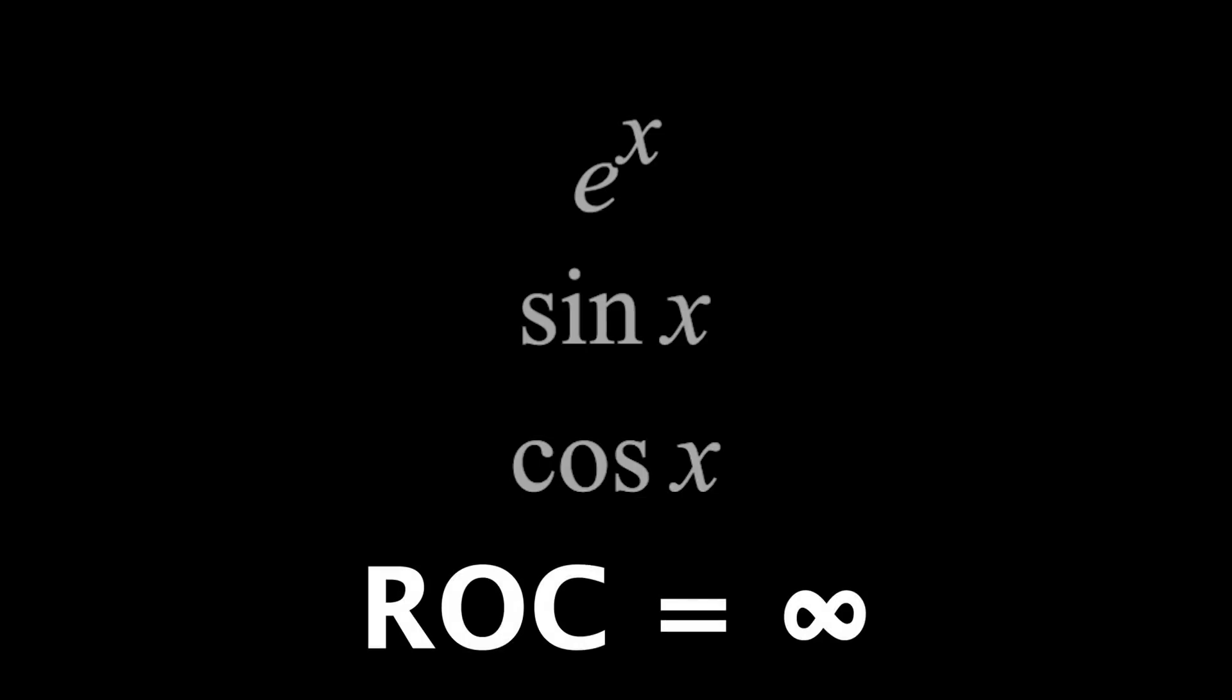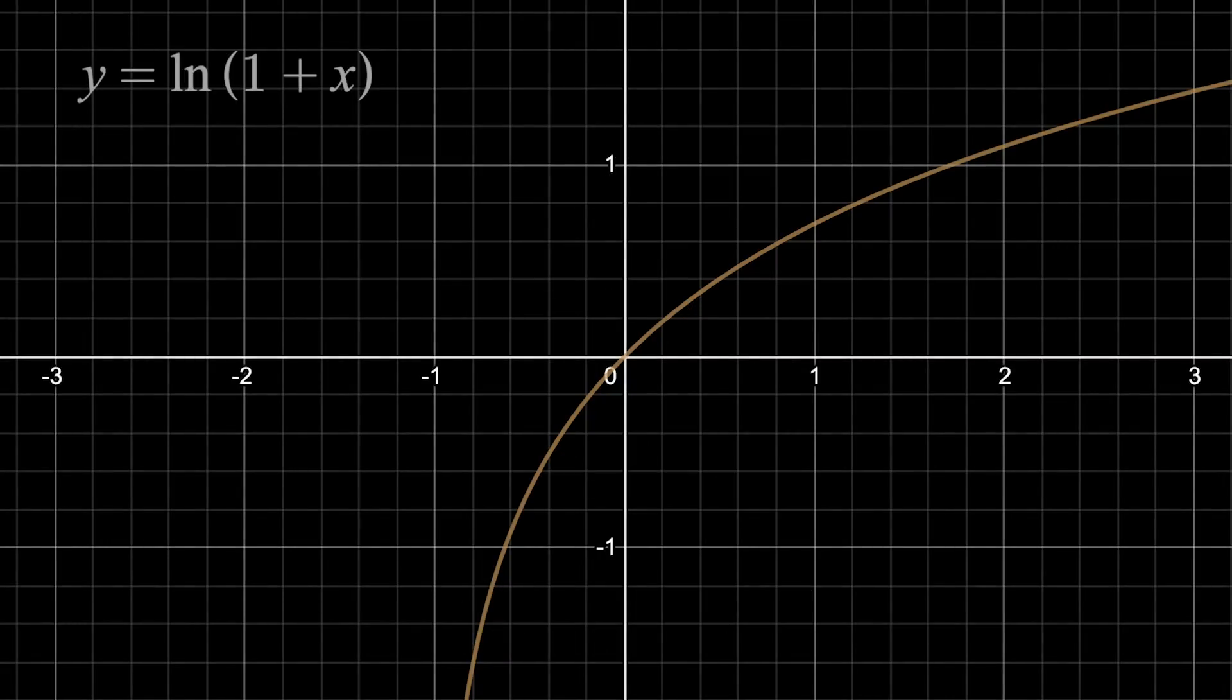Whereas the natural log of 1 plus x has a vertical asymptote at x equals negative 1. So a radius of convergence of 1 makes sense. You just move away from your center point until you hit that asymptote, and that's your radius of convergence.